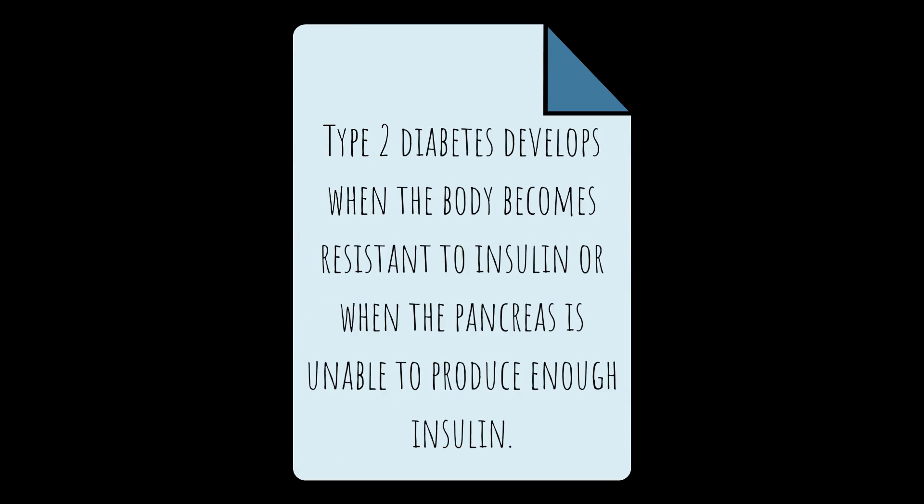Type 2 diabetes develops when the body becomes resistant to insulin, or when the pancreas is unable to produce enough insulin.